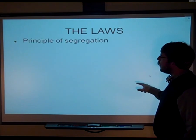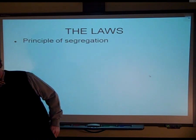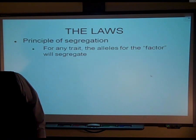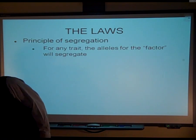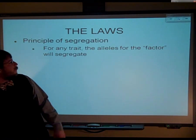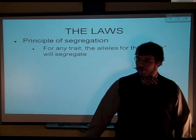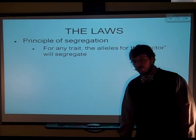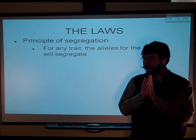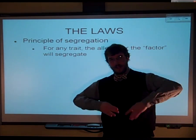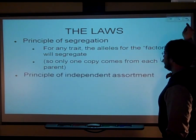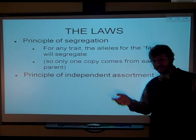Based on all this stuff, Mendel came up with a couple of laws — he called them principles, now we call them laws. A law is where something happens every single time — it's directly observed. He observed what he called the principle of segregation, now known as the law of segregation — that these two alleles, the two copies of the traits, seem to somehow segregate from each other when the gametes are being made, so you get one copy from each parent.